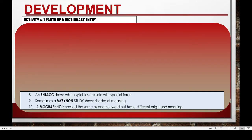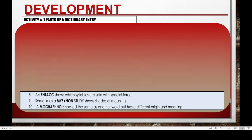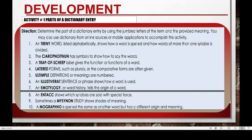Now, let us go to the activities that you have to work on. Activity number one is entitled 'Parts of a Dictionary Entry'. Here, you are going to determine the parts of a dictionary entry by using the jumbled letters of the term and the provided meaning. You may also use a dictionary from online sources or mobile applications to accomplish this activity. For example, in number one, the jumbled letters are T-R-E-N-Y and we are looking for the word 'entry'.